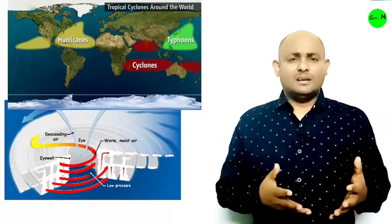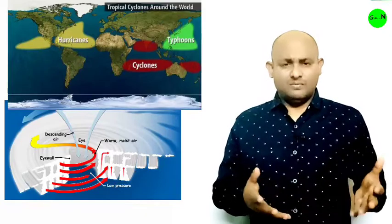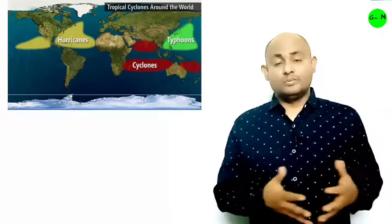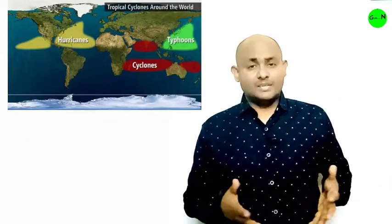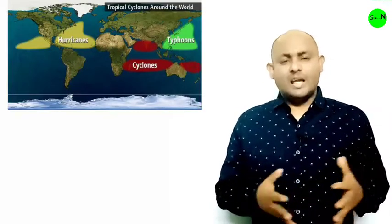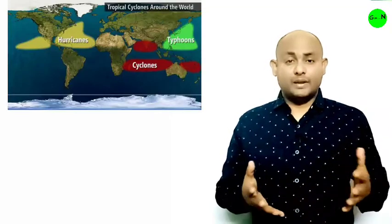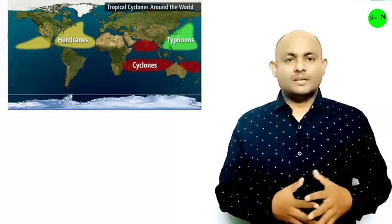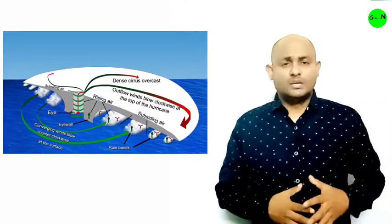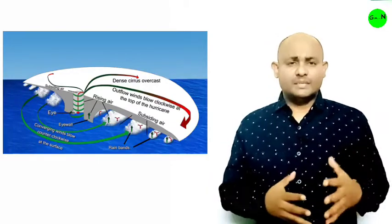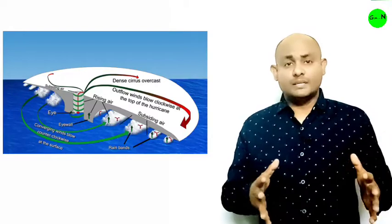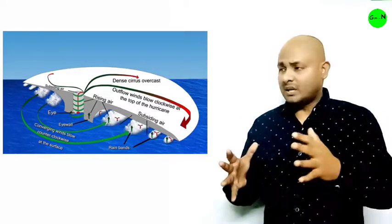Tropical cyclones are violent storms that originate over the ocean in tropical areas and move toward coastal areas, bringing large-scale destruction caused by violent winds, very heavy rainfall, and storm surges. Tropical cyclones originate and intensify over warm tropical oceans. The conditions favorable for their formation and intensification are as follows.